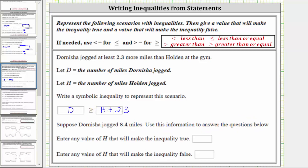We're told that D, the number of miles that Dornisha jogged, equals 8.4 miles. Let's substitute 8.4 for D into the inequality. This gives us 8.4 is greater than or equal to H plus 2.3.